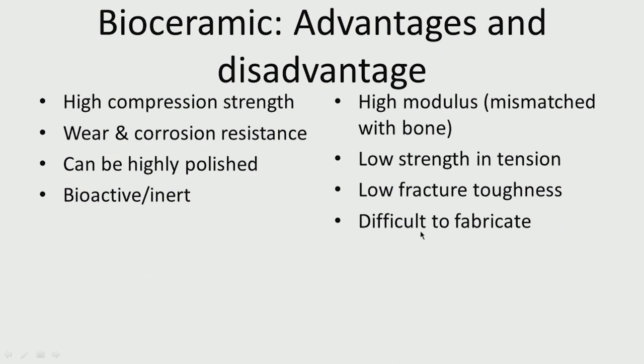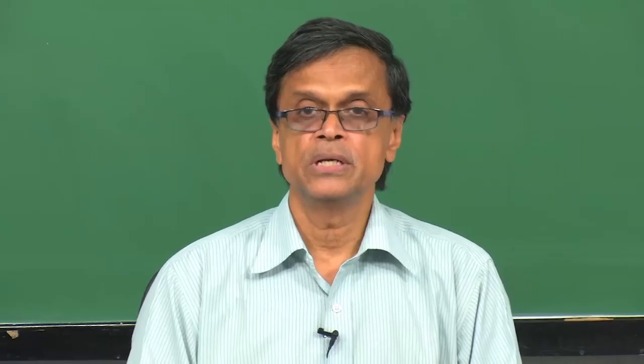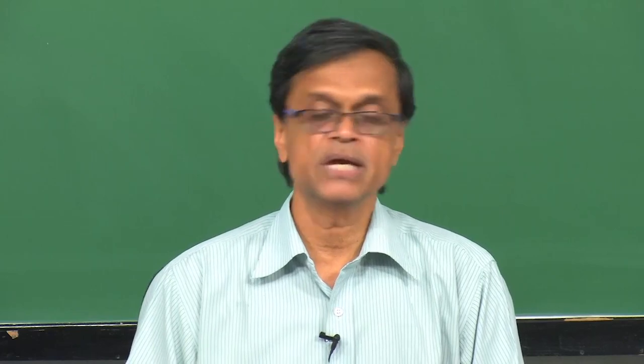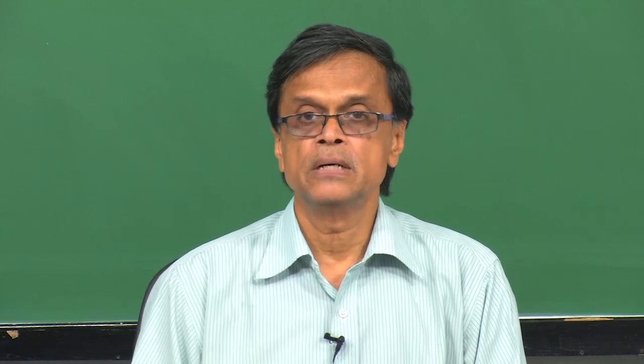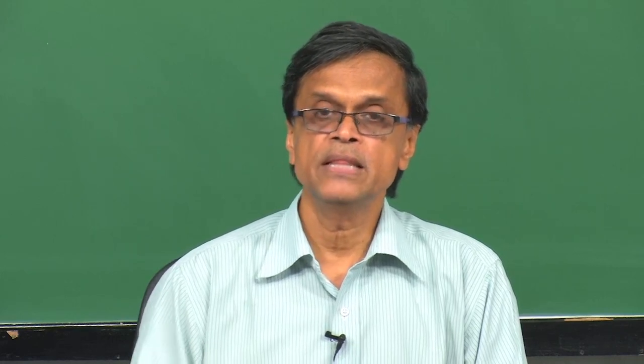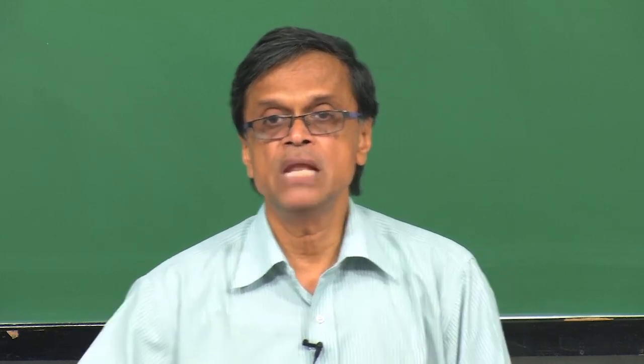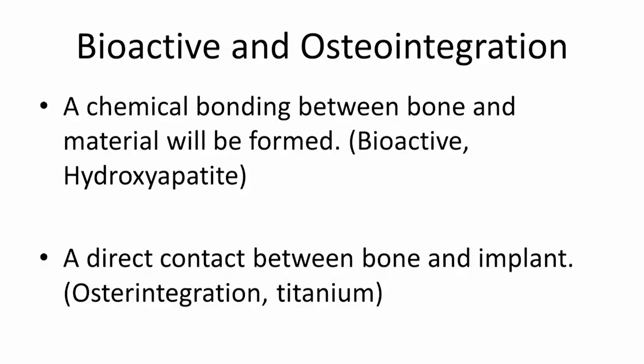Difficult to fabricate — metals and polymers can be fabricated to any shape, size, and dimension, but ceramics are a little bit more difficult to fabricate. These are some disadvantages. However, they are bioactive — they integrate very well, as the name implies 'osteo', meaning they integrate very well with the bone.